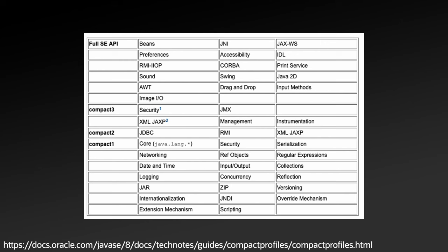This was a limited solution, however. If, for example, you were creating a simple application that processed XML files, even though almost all this functionality would be handled by the core and XML JXP APIs, you would need to use either the compact 2 or compact 3 profiles, depending upon which XML JXP APIs were used. Or, if you were building an application that read from a database containing images and then processing on those images, you'd primarily only need the core, JDBC, and image IO APIs, but be forced into using the entire Java SE runtime because that's where the image IO API was located.